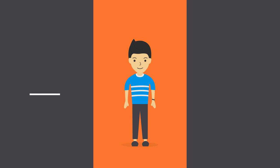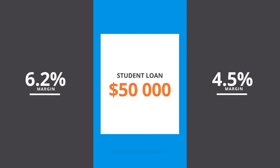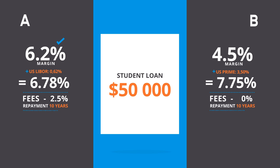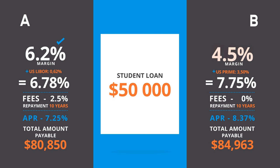Now that we know what APR is, how do we work it out? Let's help Carlo take a look at his two quotes. Carlo wants to apply for a student loan of $50,000. Option A is offering a US LIBOR base rate, and option B is using a US PRIME base rate. If we add the variable base rate plus the margin, we can already see that option A is clearly the better choice. But we need to look at the whole picture. By continuing to work out the APR, including any upfront fees, we can clearly see that even though option B looked great at the start with its lower advertised rate, option A is the more cost-effective choice.